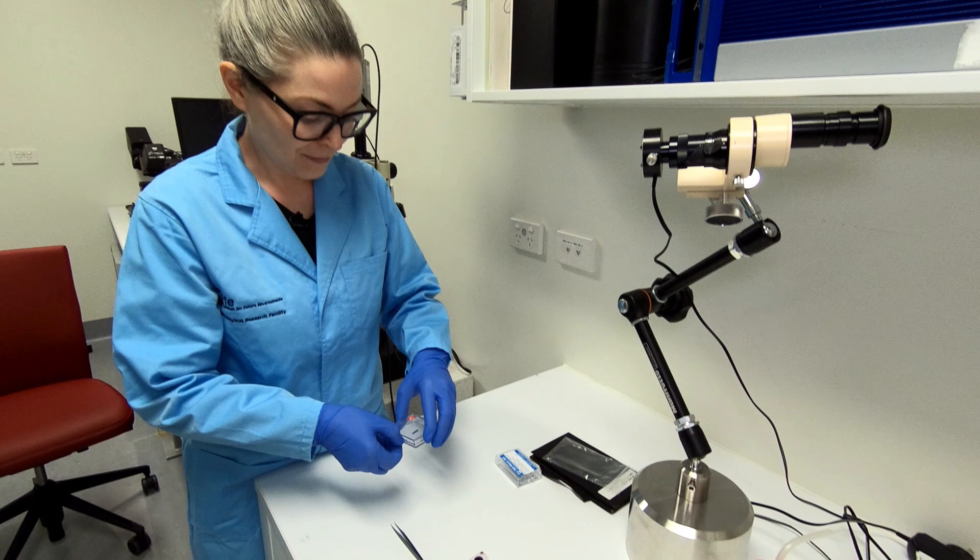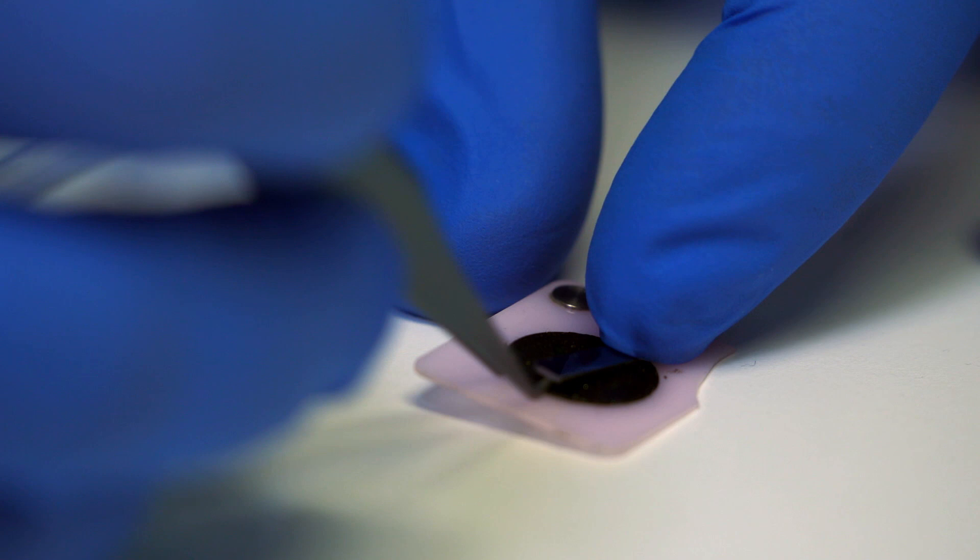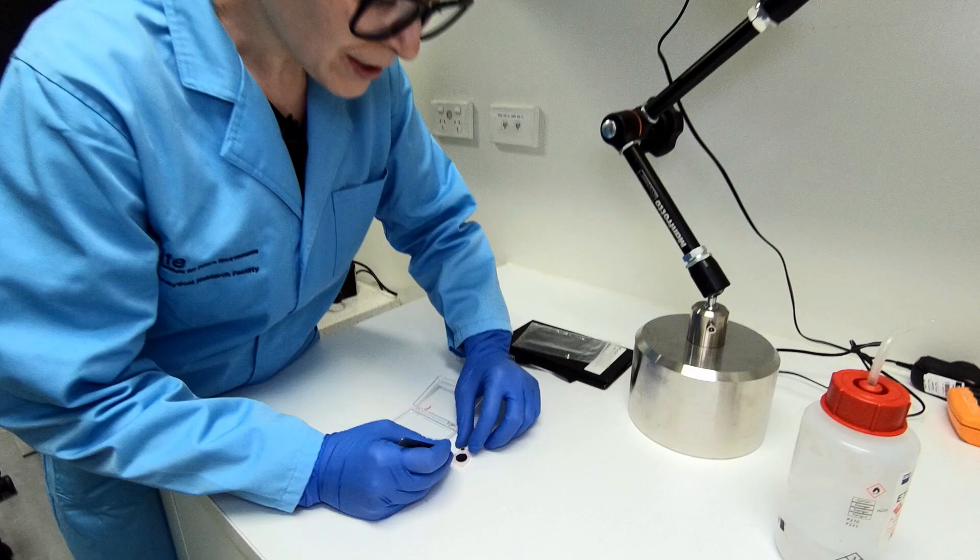The first thing we're going to need to do is install our sample into the sample holder. We're going to handle everything with tweezers because the sample was prepared in vacuum and is rather clean. For AFM, our sample holder just has a bit of sticky tape on the base. This keeps the sample stable while we're working on it.